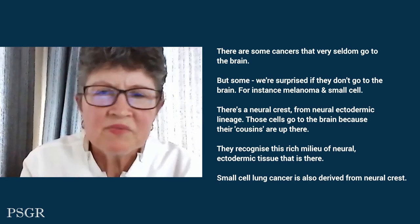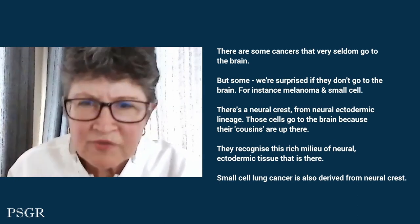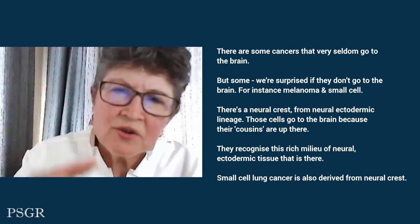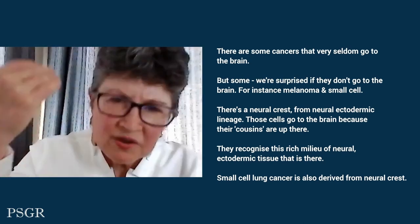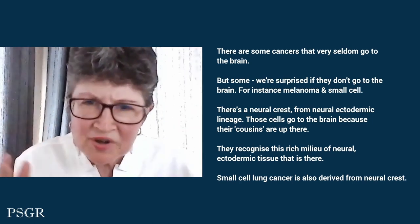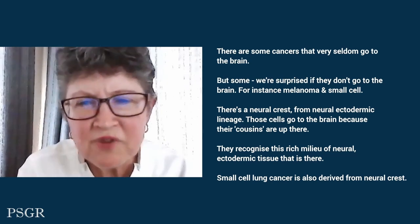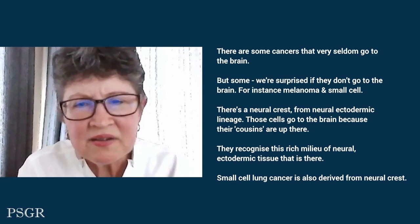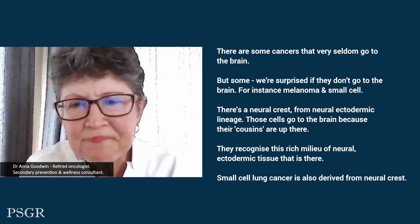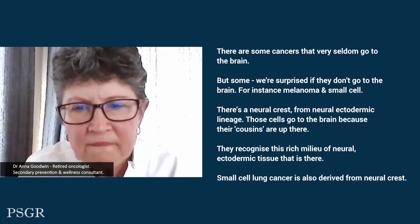You don't have to be heavy to get metastasis to your spine; many people are not. We're still beginning to understand why certain cell types home in on bone. Some cancers very seldom go to the brain, but others — like melanoma and small cell — we're surprised if they don't. Those are derived from neural crest, from neuroectodermal embryonic lineage, and those cells go to the brain because their cousins are up there. They recognize the rich milieu of neural ectodermal tissue and it feels familiar.